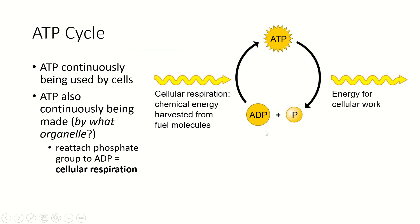So ATP is constantly being cycled. It's being made in the mitochondria — mitochondrion is singular, mitochondria is plural. The mitochondria reattach the phosphate. The ATP then goes out into the cytoplasm of the cell, gets broken into ADP and phosphate, gets taken back to the mitochondria to get put back together — gets broken, put back together, gets broken, put together. If any of you are parents, this is like being a parent of a toddler.